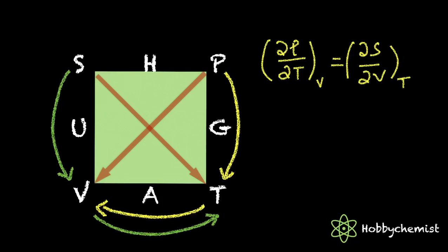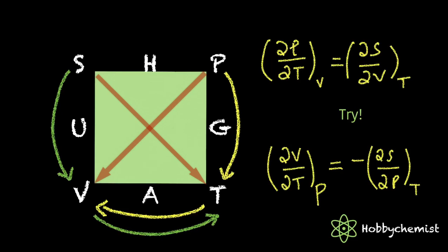Now you will be able to derive the equations connecting V and S. Let's check it out. ∂V/∂T at constant pressure equals minus ∂S/∂P at constant temperature.